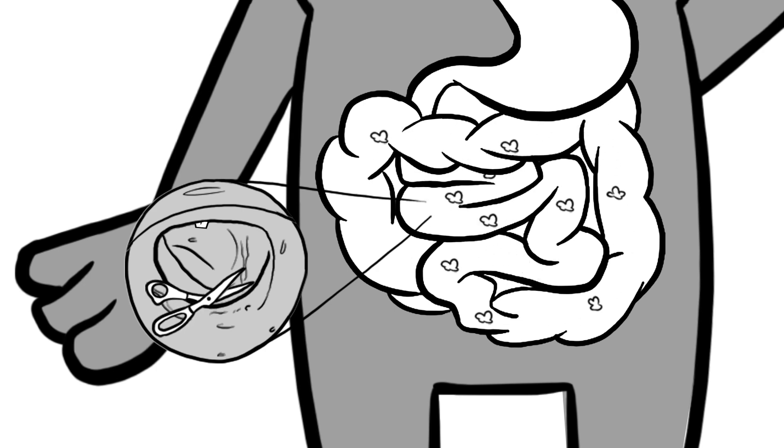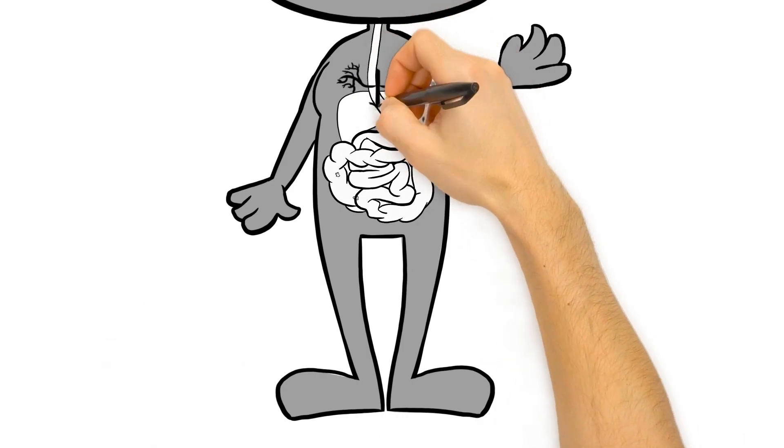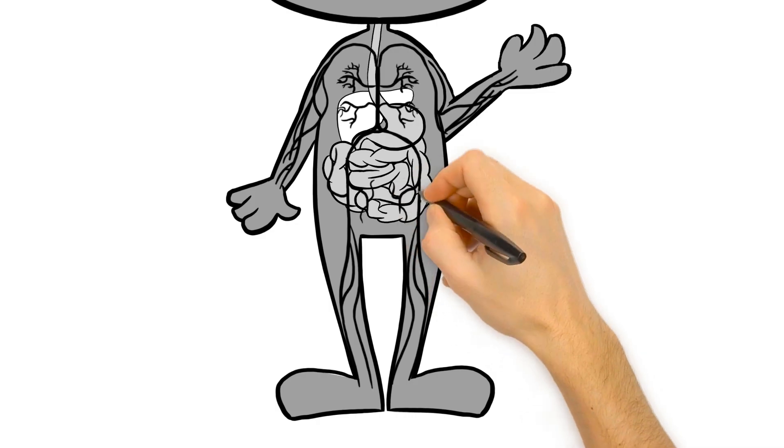Glucose and fructose are absorbed into the bloodstream and carried to the liver. Here, fructose is converted to glucose or used for energy. The liver releases the glucose back into the bloodstream for use throughout the body.